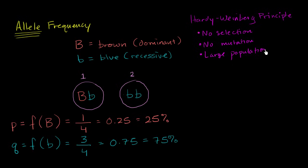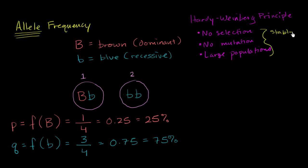That would definitely throw out the example from the last video, which I used just to understand the notion of allele frequencies, where we said one out of four genes in the population — one fourth of the alleles — are the dominant brown, while three fourths or 75% were the recessive blue. We're going to assume large populations — many, many, many — because in very small populations, it's easy to get changes in frequencies. Larger populations help us assume stable allele frequencies.